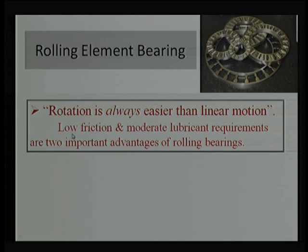Rolling motion is preferred because of low friction and moderate lubricant requirement. We have studied the function and importance of lubricant — to reduce friction and wear. In rolling element bearings, friction and wear are very low, so we require only a small quantity of lubricant. In many cases, even if there is no lubricant, the bearing can survive for some time — from a few minutes to a few hours to a few days — depending on the rotating speed.